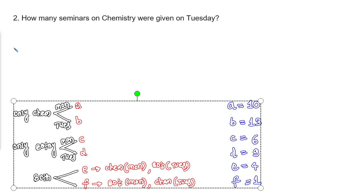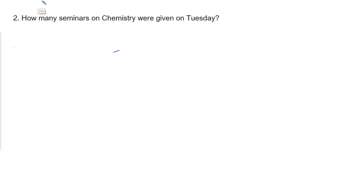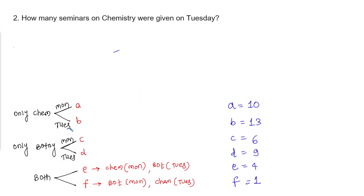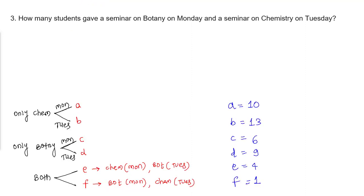Question 1: how many seminars were given in all by students on both days at the science park? Students A, B, C, D each gave 1 seminar; E and F each gave 2 seminars. Total = A plus B plus C plus D plus 2(E plus F) = 10 plus 13 plus 6 plus 9 plus 2(5) = 38 plus 10 = 48.